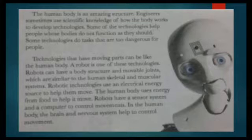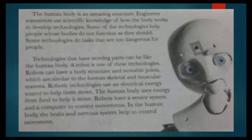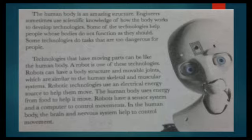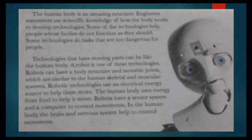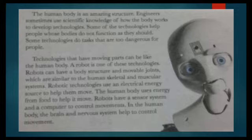The first question to investigate is: what is a prosthetic limb? Okay, if you're ready, let's go. Open your book on page 241. The topic is 'Technology and the Human Body.' The human body is an amazing structure. Engineers sometimes use scientific knowledge of how the body works to develop technologies. Some technologies help people whose bodies do not function as they should, and some do tasks too dangerous for people. Technologies with moving parts can be like the human body — a robot is one of these technologies.